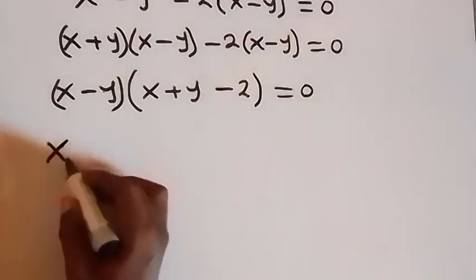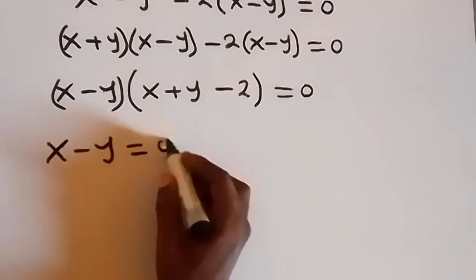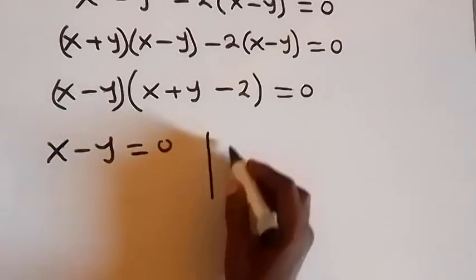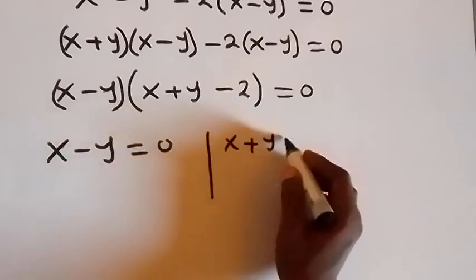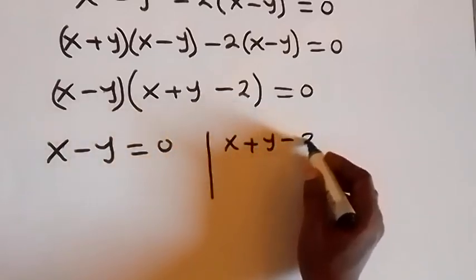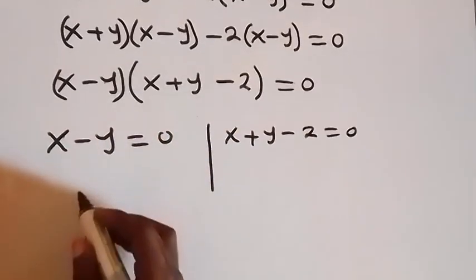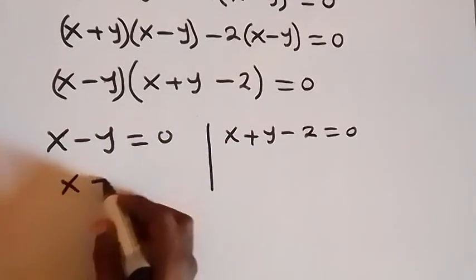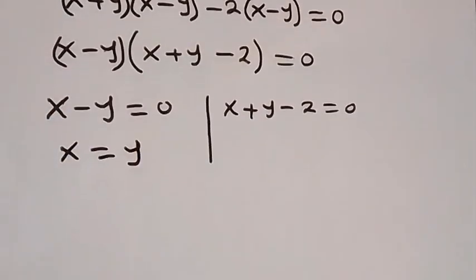From here we have two cases. The first case is x minus y equals 0, and the second case is x plus y minus 2 equals 0. From the first case, x equals y.